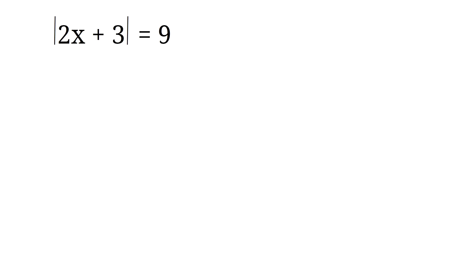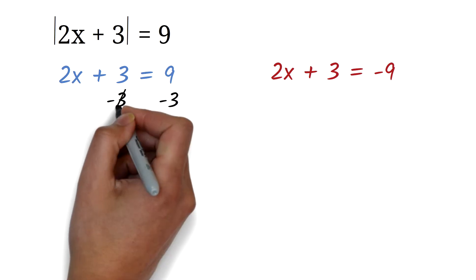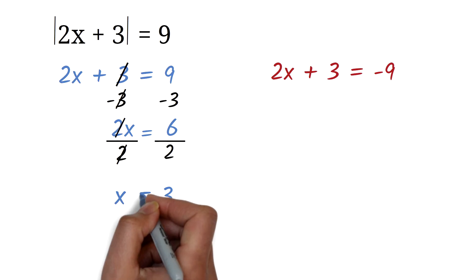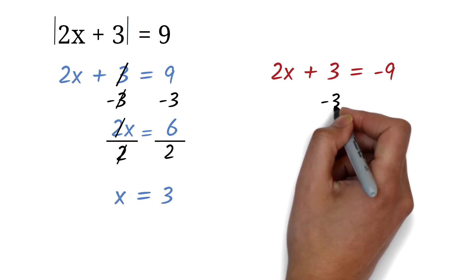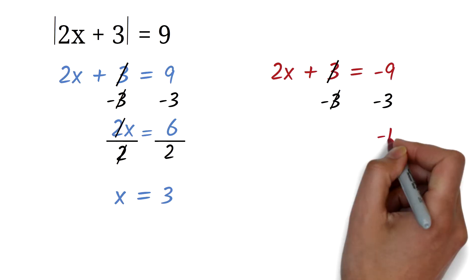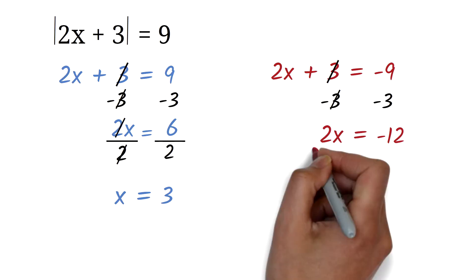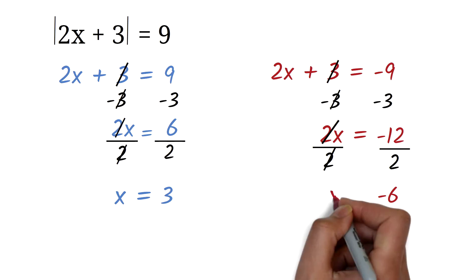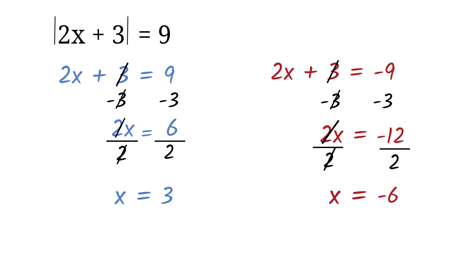The absolute value of 2x plus 3 is 9. Find x. We equate 2x plus 3 to positive 9 and then to negative 9. For the first: subtract 3 from both sides to get 2x equals 6, then divide by 2 to get x equals 3. For the second: subtract 3 to get 2x equals negative 12, then divide by 2 to get x equals negative 6. Therefore x equals 3 or x equals negative 6.